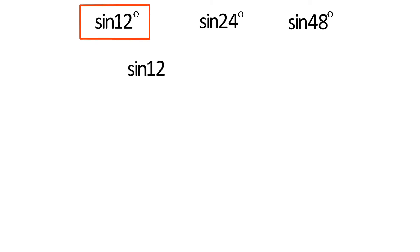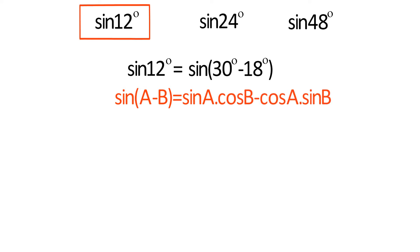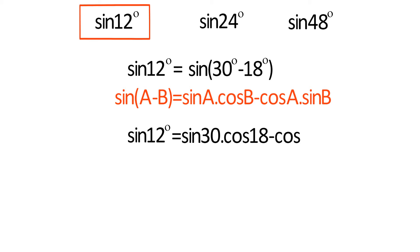sin 12 degrees equals sin(30 degrees minus 18 degrees). We know that sin(A minus B) equals sin A cos B minus cos A sin B. So sin 12 degrees equals sin 30 degrees cos 18 degrees minus cos 30 degrees sin 18 degrees.